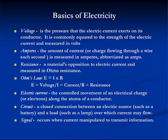An electrical current is the controlled movement of an electrical charge or electrons along the atoms of a conductor. In order for current to flow in a circuit, the circuit must be completed — it is a closed connection between an electrical source, such as a battery, and a load, such as a lamp, over which current may flow. A signal occurs when current is manipulated to transmit information.